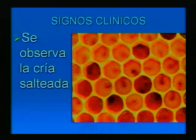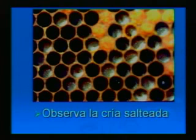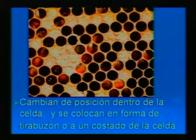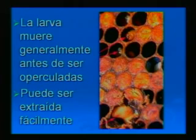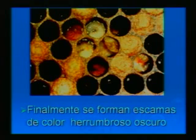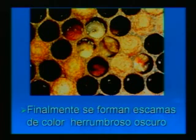Los signos clínicos: como dijimos anteriormente, el principal signo clínico es la cría salteada; vemos que faltan larvas en medio de otras larvas sanas. Después comenzamos a ver larvas que cambian de posición sin estar operculadas, en forma de tirabuzón o a un costado de la celda. Se vuelven amarillas y opacas y la larva muere siempre antes de ser operculada, que es la gran diferencia con loca americana. Además, pueden ser fácilmente extraídas y no se forma chicle.